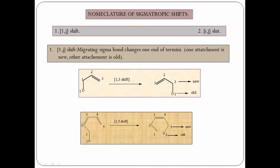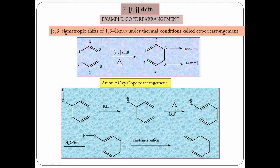Sigmatropic shifts are classified into two types: 1,j shifts and i,j shifts. In a 1,j shift, the migrating sigma bond changes one end of the terminal — one attachment is new, the other is old. In a 1,3-shift, the sigma bond moves from position one to position three, so deuterium moves to terminal three while position one remains unchanged. In a 1,5-shift, deuterium moves from position one to the fifth position.